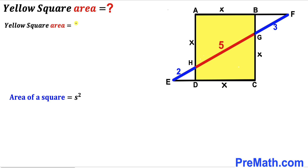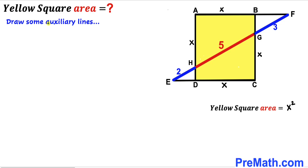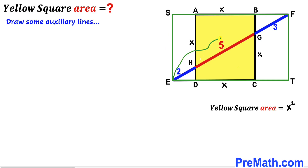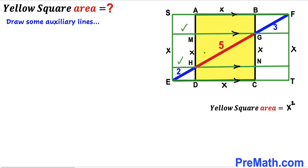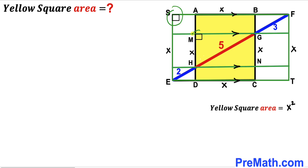Our task is to find the value of x squared, and we are going to draw some auxiliary lines to make our job simpler. As you can see, we have drawn rectangle SFTE such that EF is the diagonal of this rectangle. We can see that AD has length x, so SE is also x, and FT is x as well. Furthermore, we have drawn parallel lines through points G and H, all parallel to each other, and this angle is 90 degrees and this angle is 90 degrees as well.